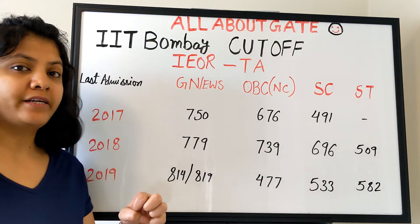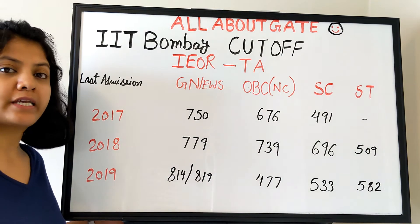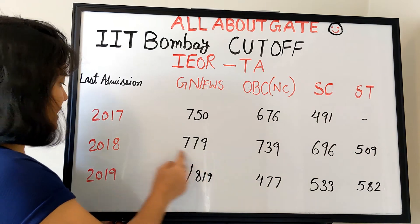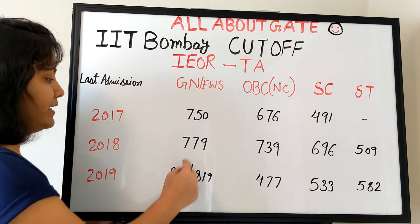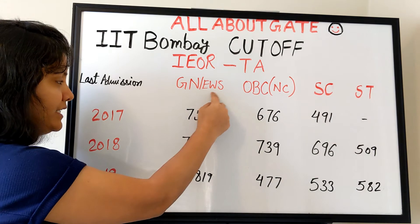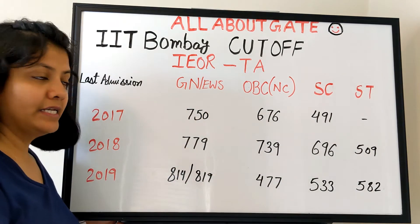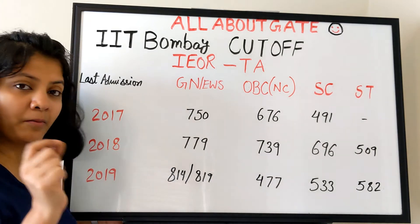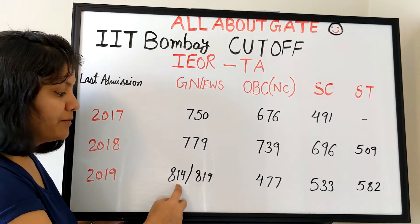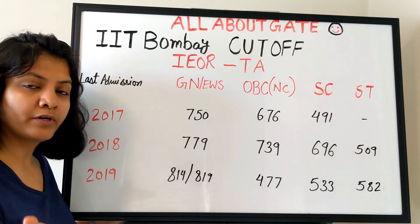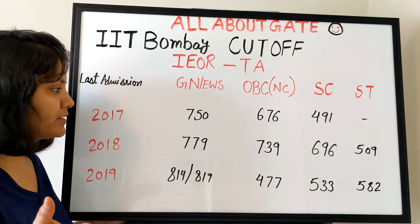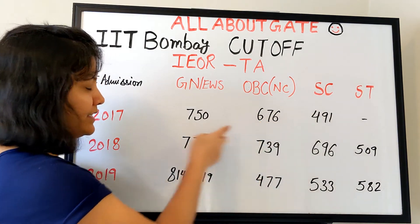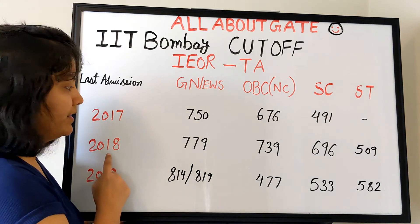Now let's talk about the last admission update — the GATE score at which the last admission was taken. For General category: 750 in 2017, 779 in 2018, 814 in 2019, and AWS General is 819. You can see the increasing trend. The minimum qualifying cutoff is 650, but the last admission was stopped at 814. For OBC category: 617 in 2017, 739 in 2018.